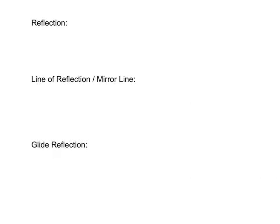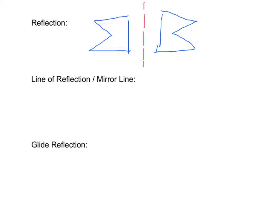A reflection is another type of isometry — it's the mirror image of a figure. The line of reflection is also called the mirror line. It defines a reflection and is the perpendicular bisector of every segment joining a point in the figure with its image. Basically, it's the line over which the image is reflected. If we join all the corresponding points, this line divides them all in half and is perpendicular to all of them.